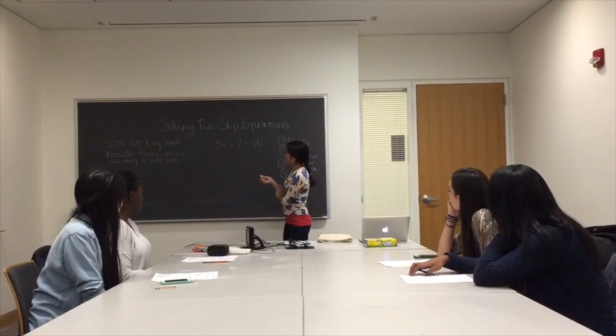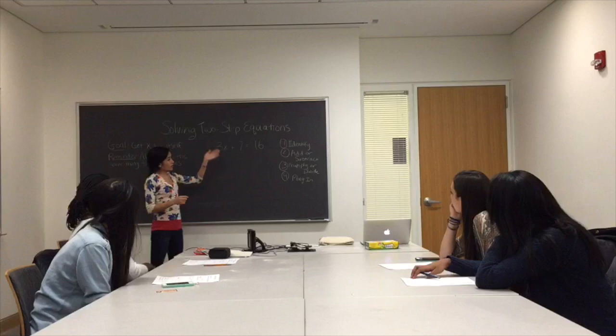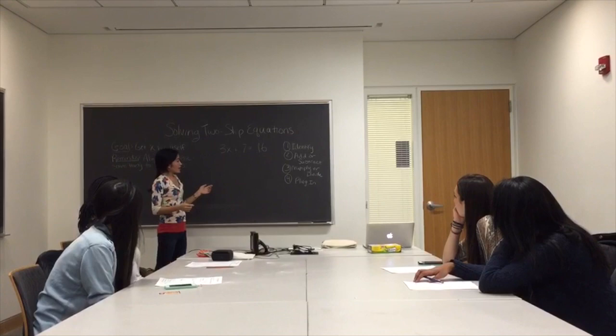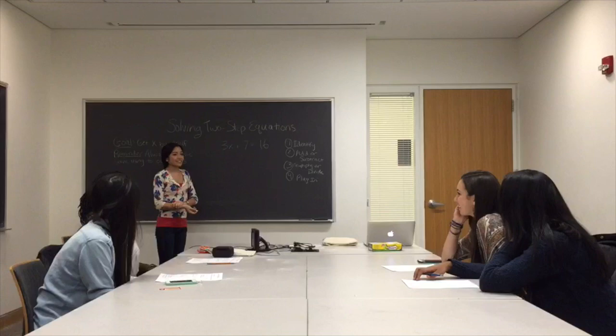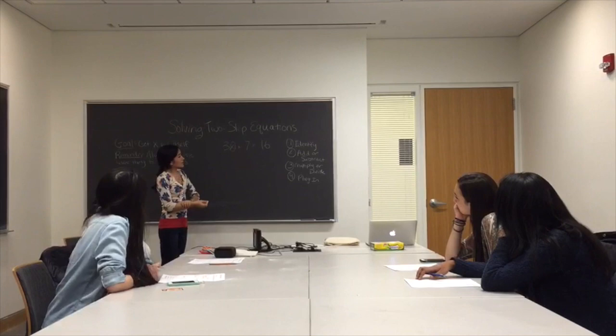So now I'm going to do a short example that you're going to help me through. This equation says 3x plus 7 equals 16. The first step is to identify the variable — a letter that looks different because all the other things in the equation will be numbers. Can anyone see what might be the variable? Let's go with Becca. X. Yes, the variable is x. We have now done step one — we have identified the variable.